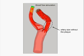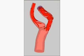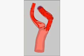Plaques can alter the pattern of blood flow significantly. A computer simulation shows that instead of moving smoothly along the artery, like the calm flow of water in a lazy stream, the blood flow is well mixed with eddies around the plaque. It is more like whitewater rapids in a river.